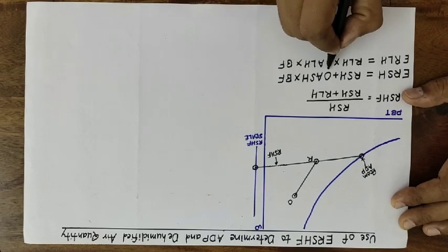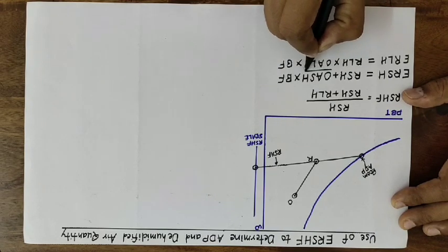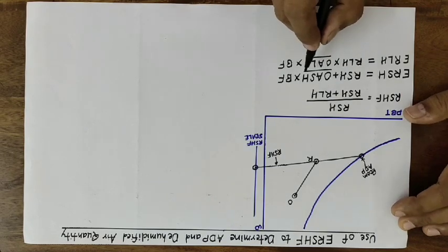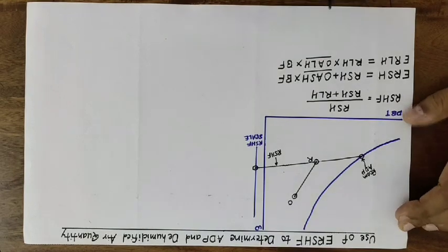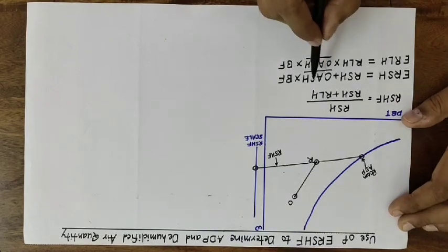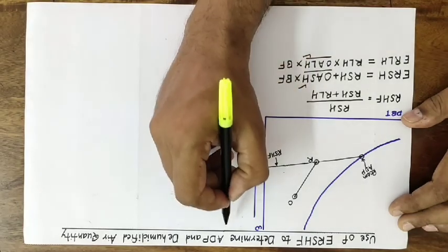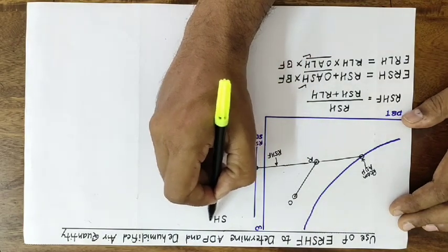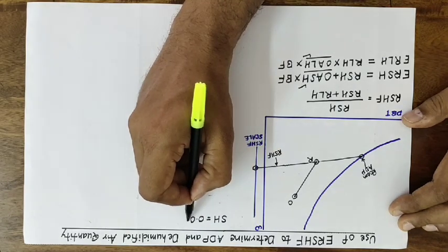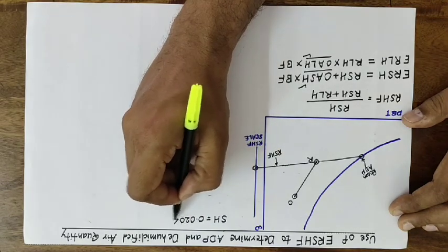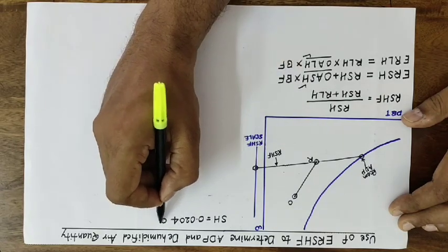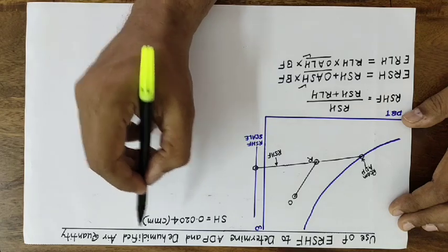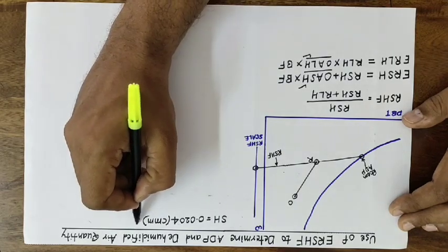The bypass factor of the coil must be known, and we must calculate the outside air sensible heat as well as outside air latent heat. We have learned the sensible heat formula as 0.0204 — this is essentially the formula of ṁ × Cp of air, where the volume flow rate is taken in CMM (cubic meters per minute), divided by 60 to convert to cubic meters per second, multiplied by ΔT.